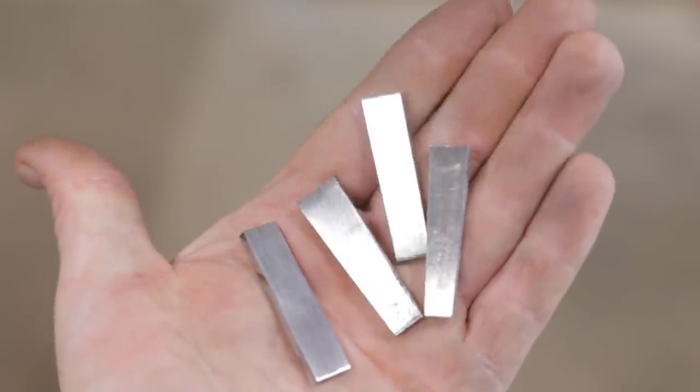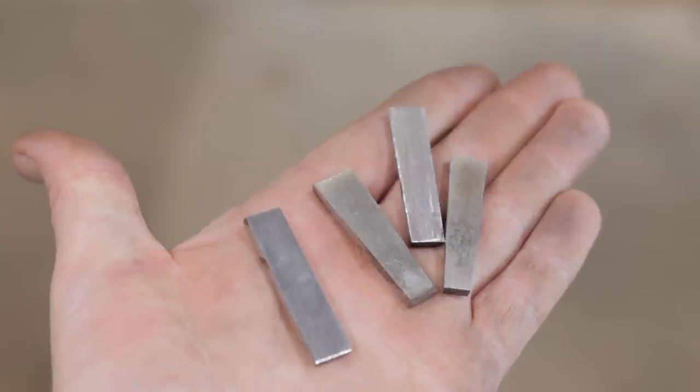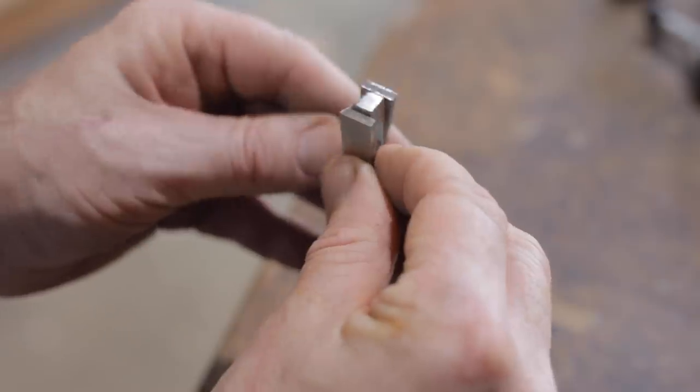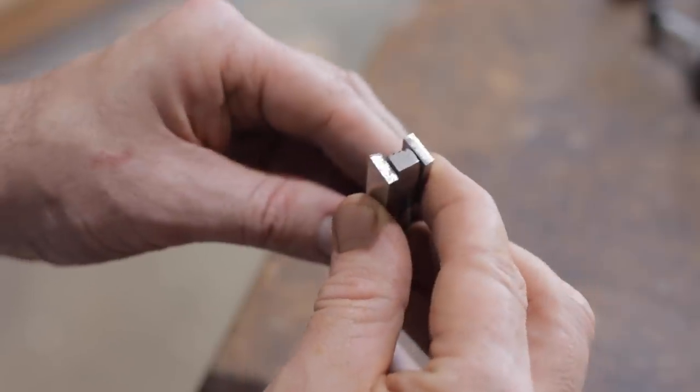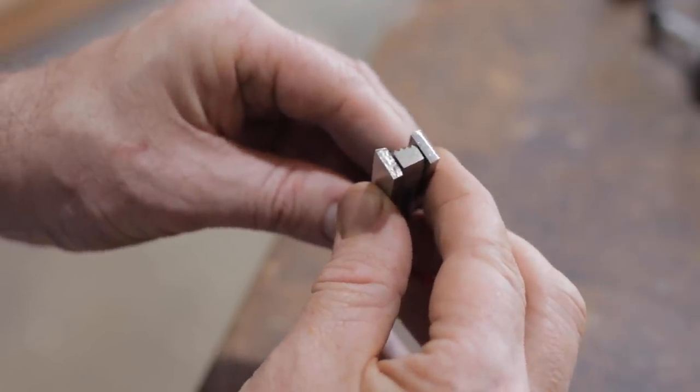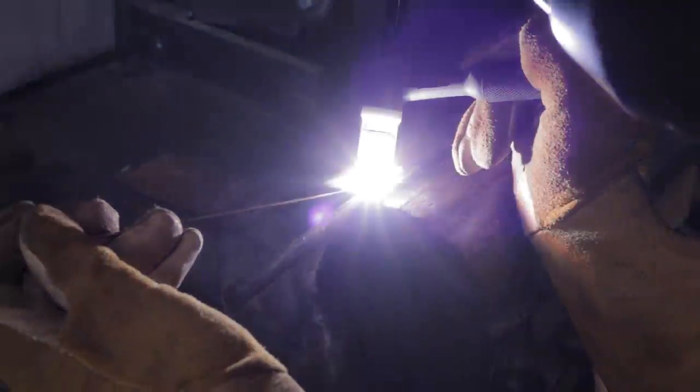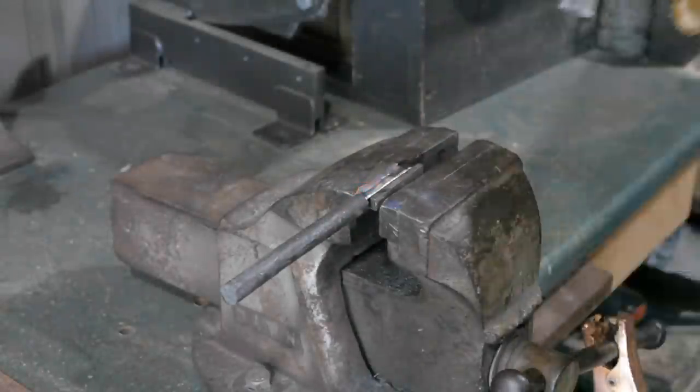I've got these offcuts of 1075 steel from when I've made knives. I'm going to weld two of them to opposite faces, then I'll file those down to the correct position and weld the last two on afterwards. I have no idea if this is going to work, I don't really know what I'm doing, I'm just giving it a go.